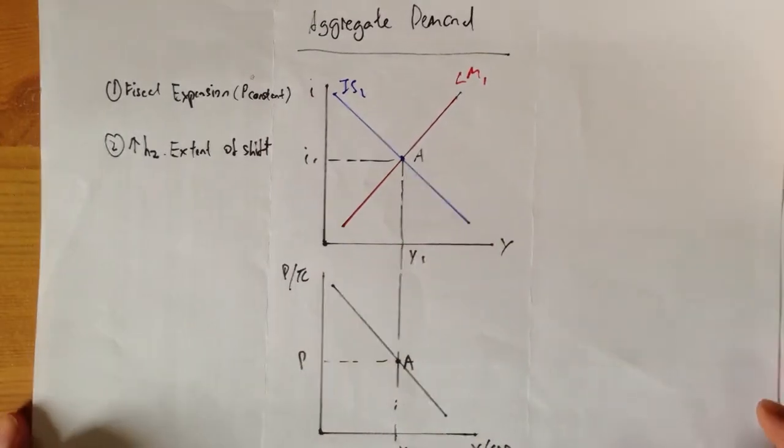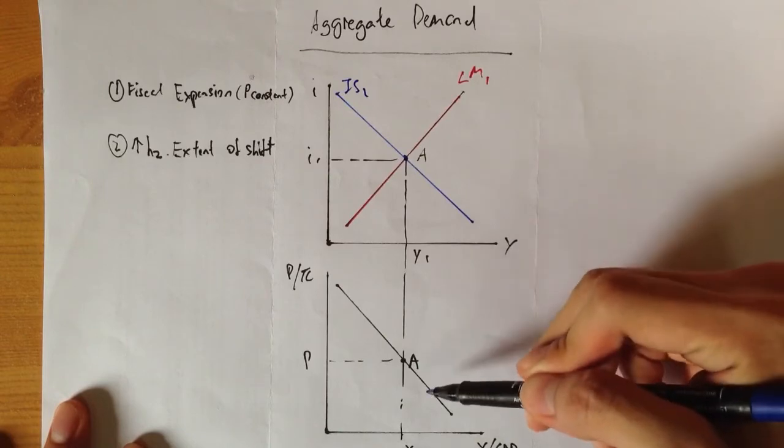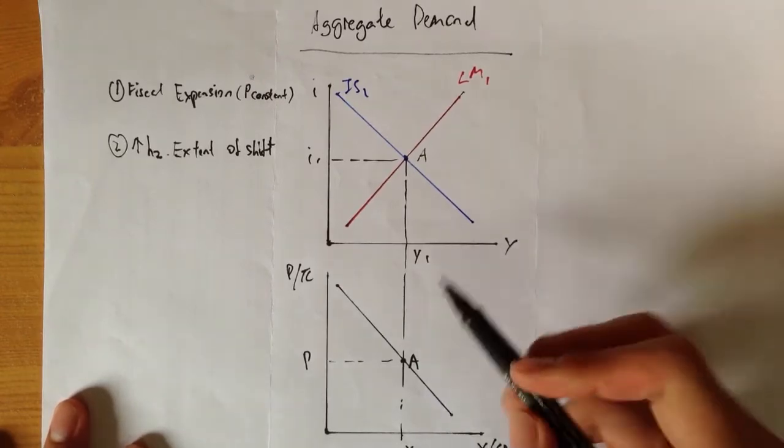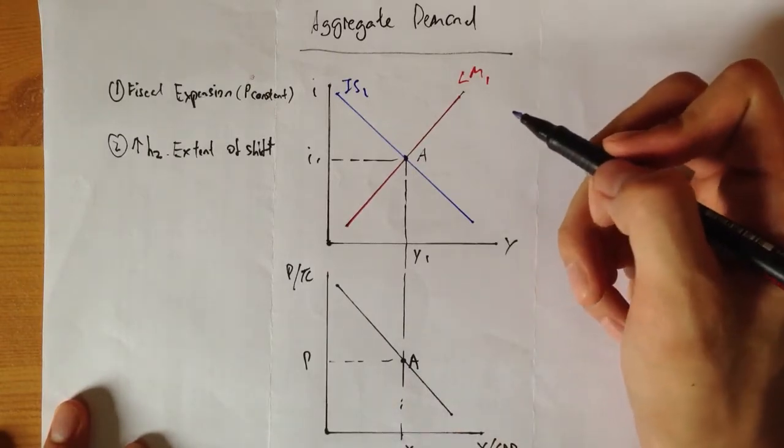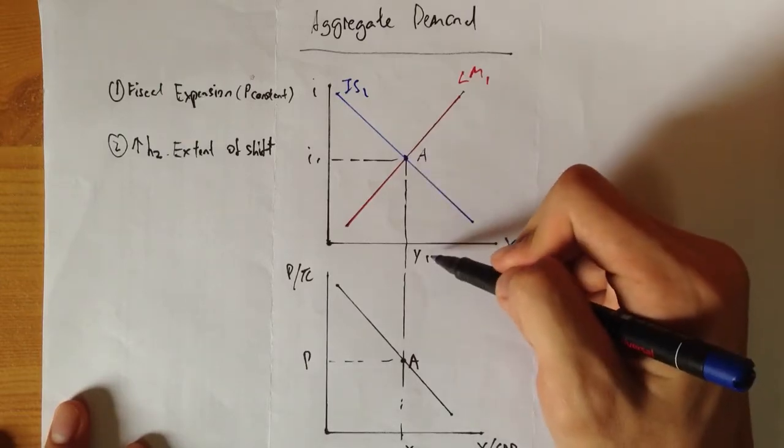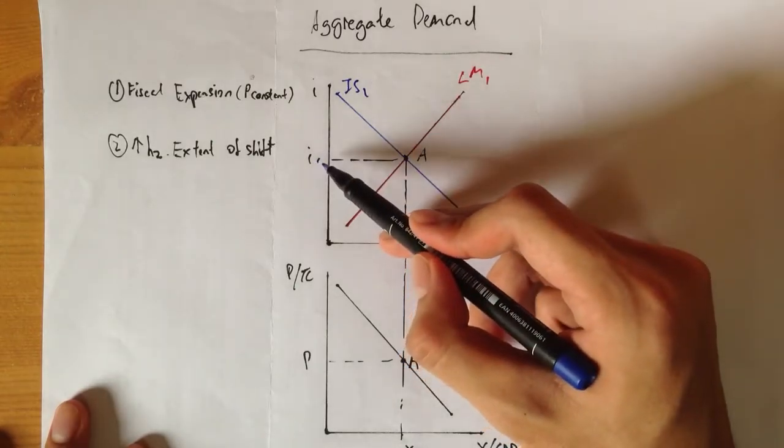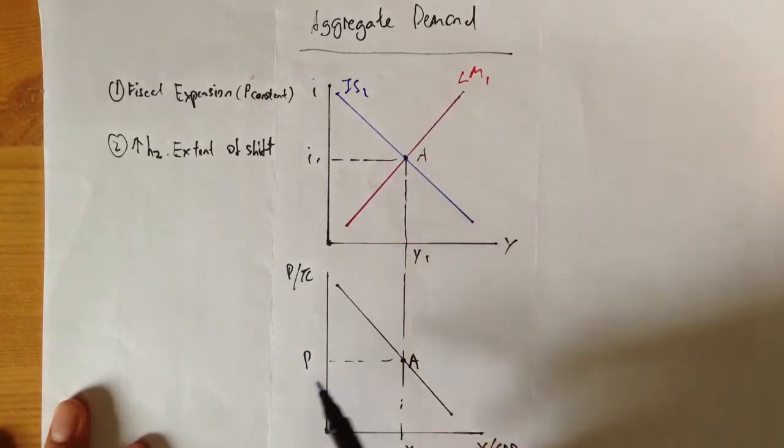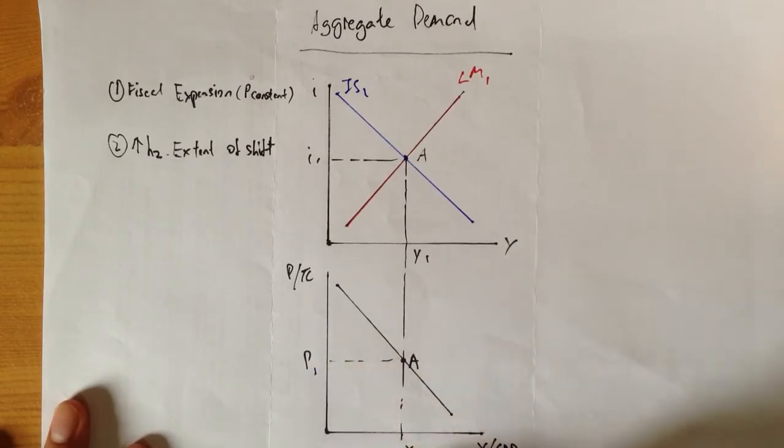Right here I already have your ISRM diagram and your AD diagram. At this initial equilibrium point, we have our output level of Y1 and interest rate level of I1. We have prices P1 and Y1 here.